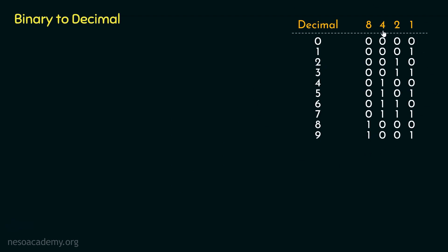Now if you notice the place values 1, 2, 4, and 8 in the table, these are the place values in powers of 2: 1 is 2 raised to the power 0, 2 is 2 raised to the power 1, 4 is 2 squared, and 8 is 2 cubed. This is the proper representation — just like in decimal where place values were powers of 10 (units, tens, hundreds, thousands), for binary we use the same format with powers of 2.